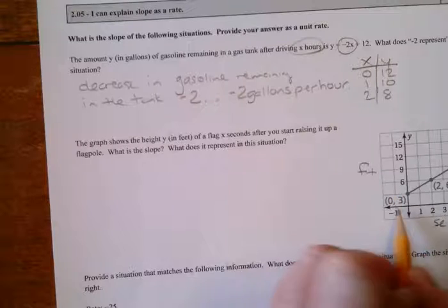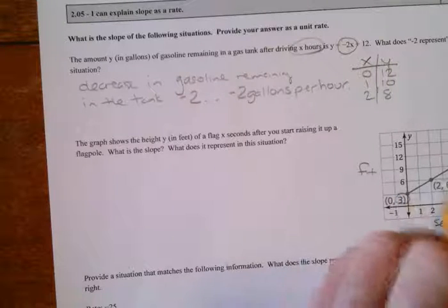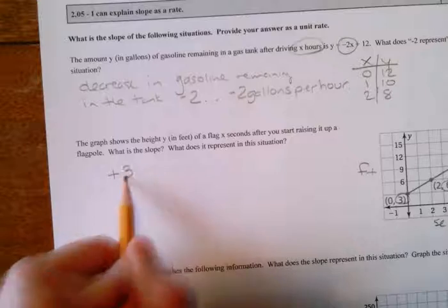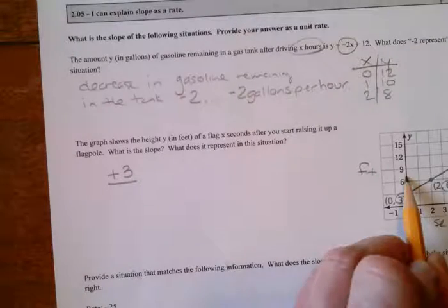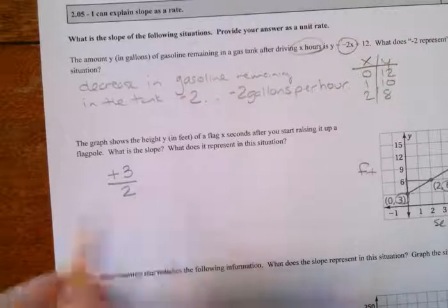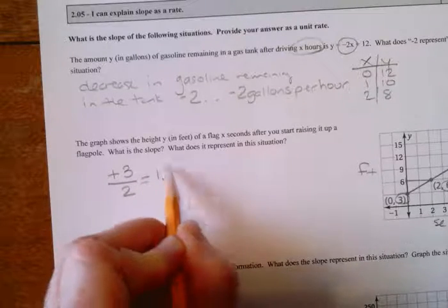So it looks like we went from three to six. So we went up three. And we went to the right from zero to two.